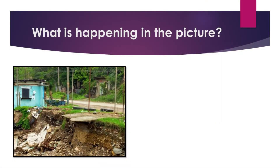Looking at the first picture, we can see there is an area beside a house that is basically washed away — the soil covering is lost. This represents a landslide, and this is a picture of what has happened in Jamaica. As a result, there can be damage to buildings and persons can get hurt just by walking in that particular area.